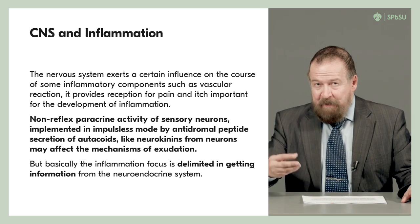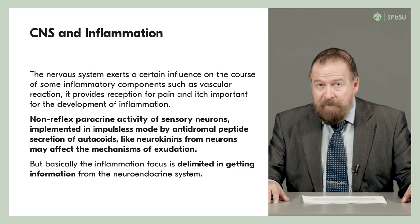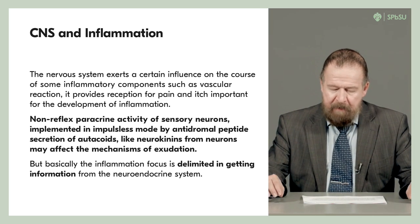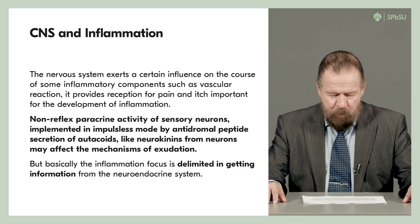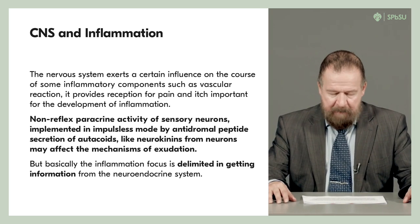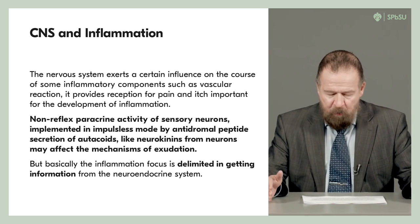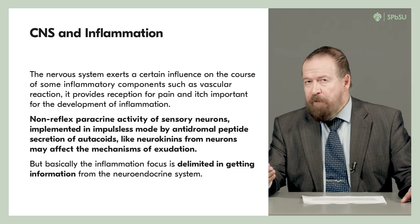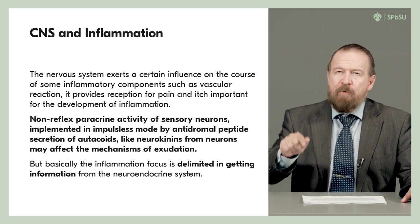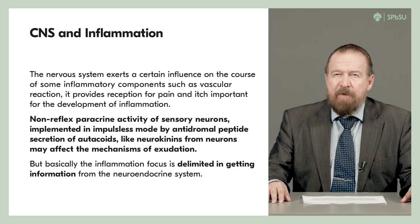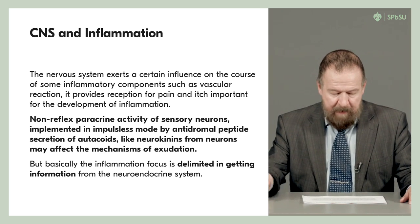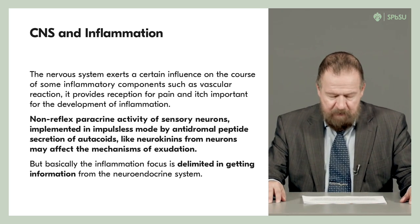Sensory neurons are endocrinocytes and they are able to secrete, in an impulseless mode via the antidromal pathway, peptides or autacoids like neurokinins — for example, substance P and other neurokinins. These neurokinins, from sensory neurons innervating the foci or areas of inflammation, may influence the mechanisms of exudation.